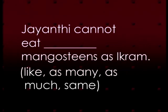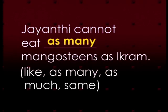Number two: Jayanti cannot eat ___ mangosteens as Ikram. The answer should be 'as many' because mangosteens are countable nouns. Jayanti cannot eat as many mangosteens as Ikram.